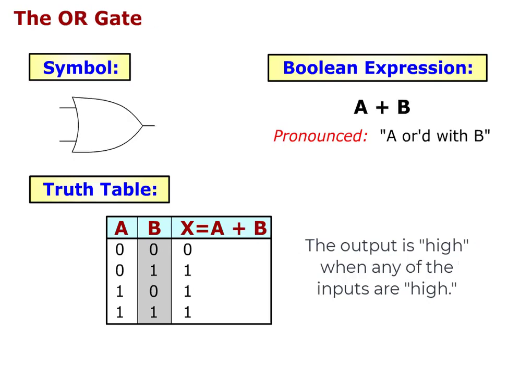This is the symbol, Boolean expression A ORed with B, and truth table for the OR gate. The truth table indicates the output is HIGH when any of the inputs are HIGH.